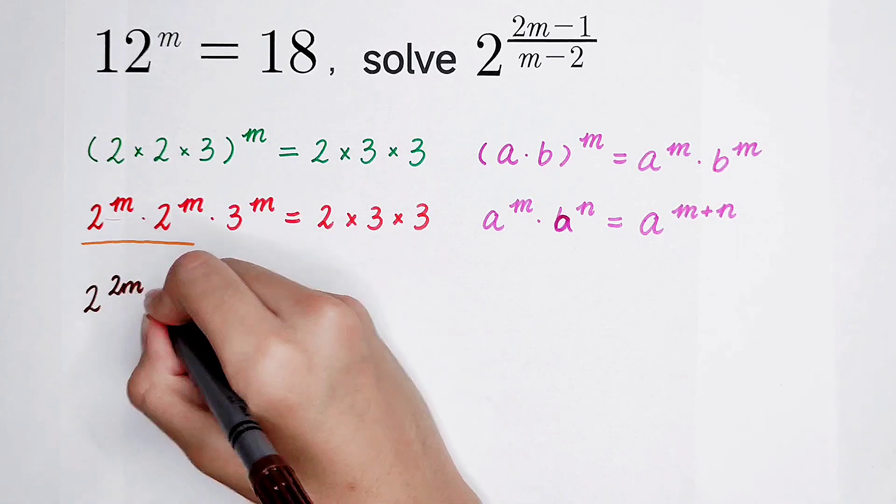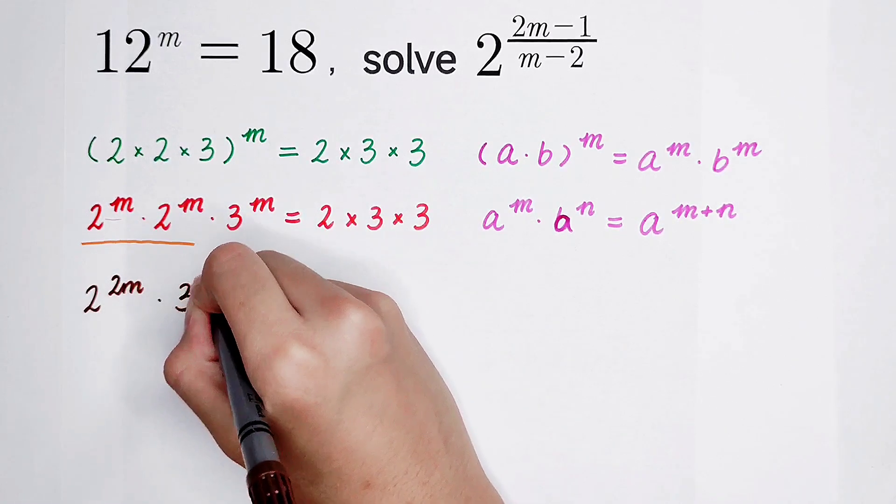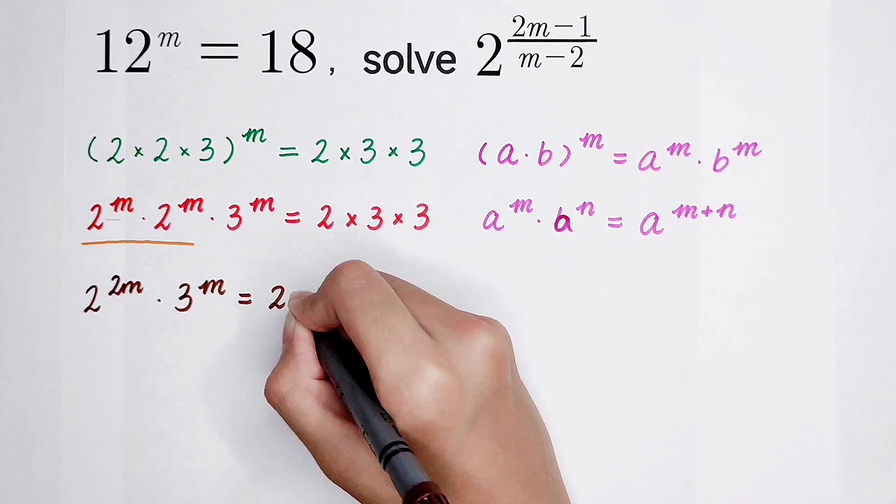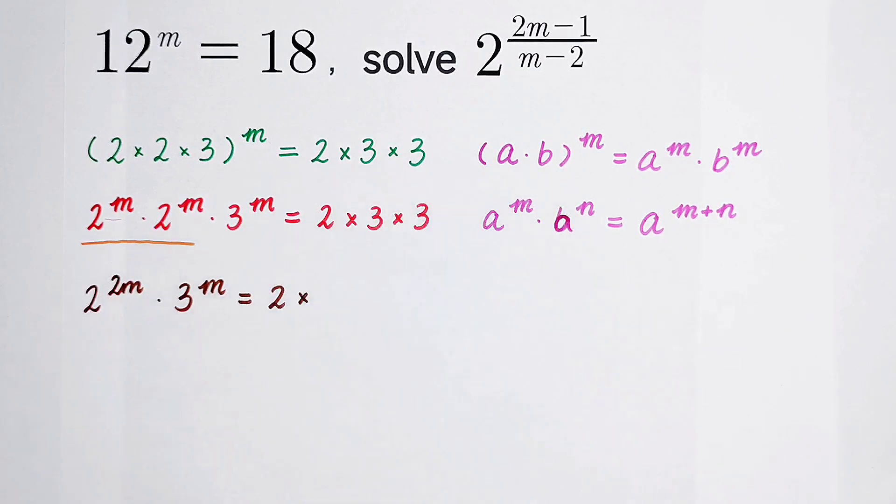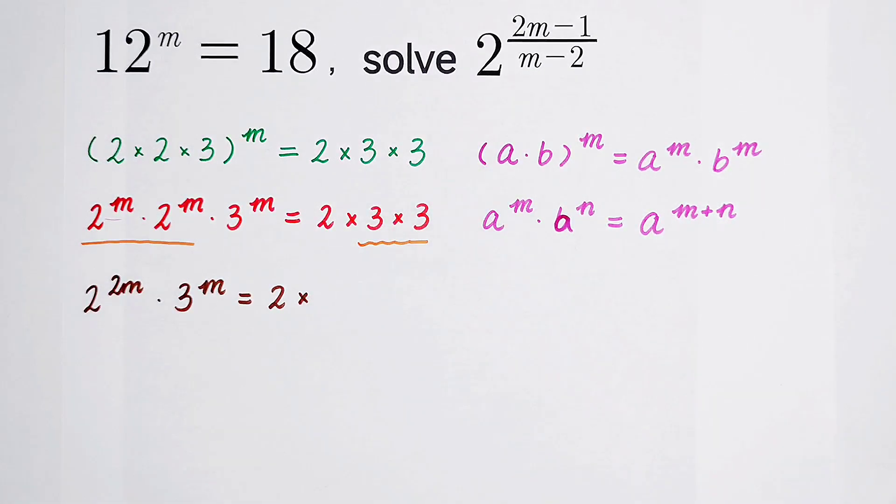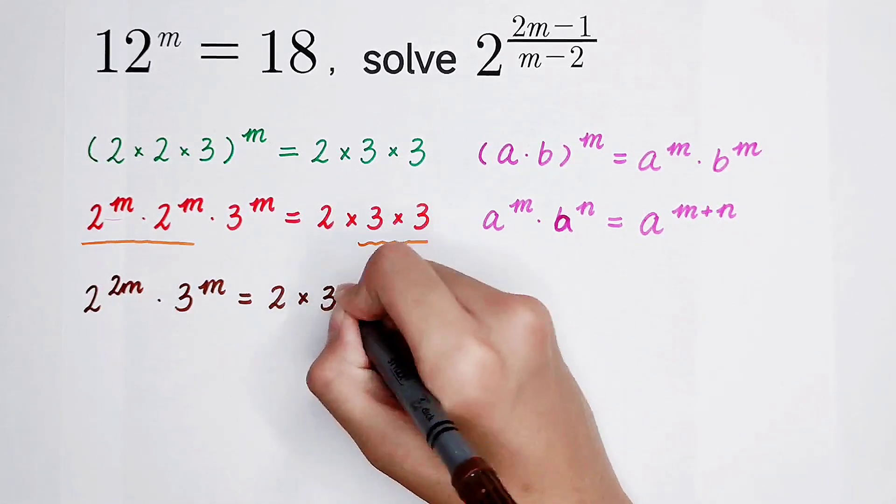That is 2 to the power 2m. And then times 3 to the power m. And it is equal to 2 times, you see here, 3 times 3. Don't write it as 9. We should write it as 3 to the power 2.